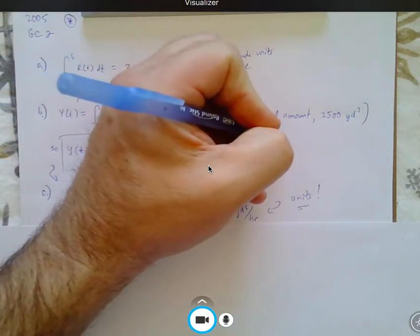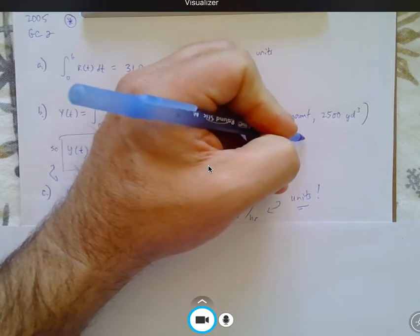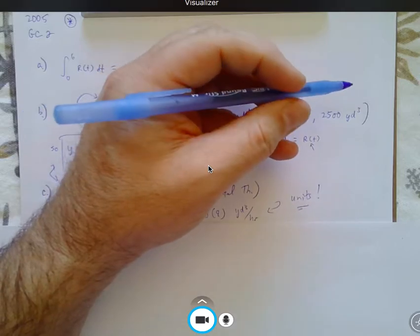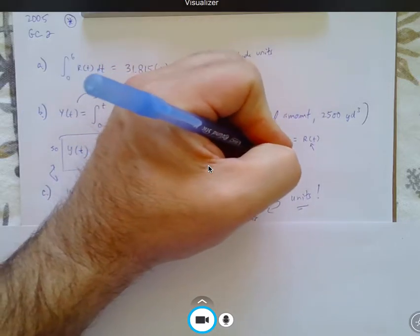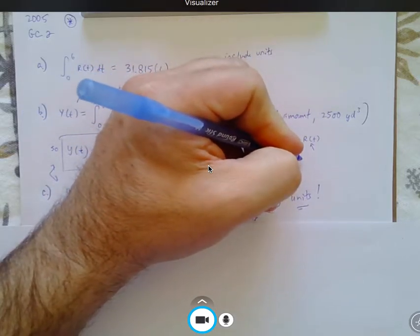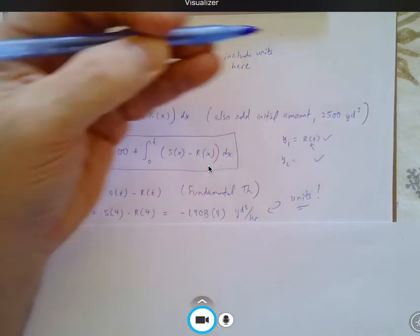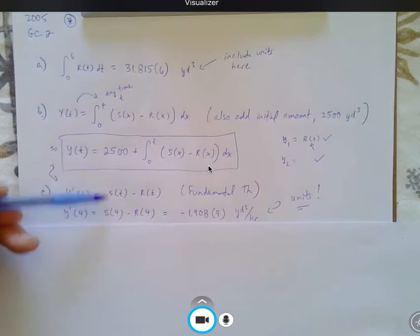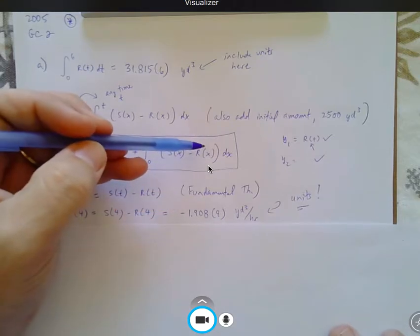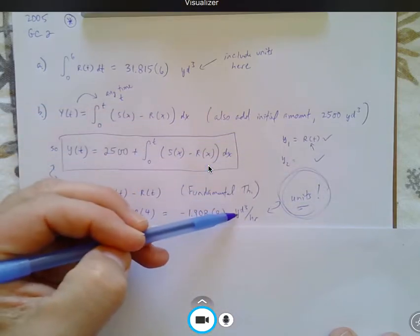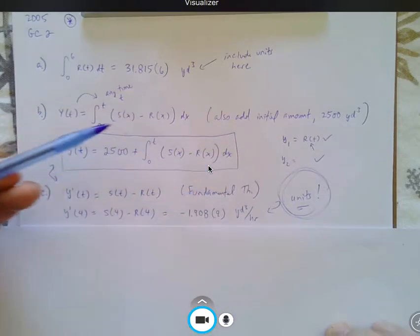And one of the things I would do here is, to make things really easy for you, is I would have typed in under Y sub 1, you know, the R of T, like whatever it was, and the Y sub 2, like whatever it was. So keep that in mind that if you type them in your calculator, then you can just type it in here and get the answer that they're looking for. Again, units for full credit, that's keeping that in mind, cubic yards per hour, because it's a rate of change.